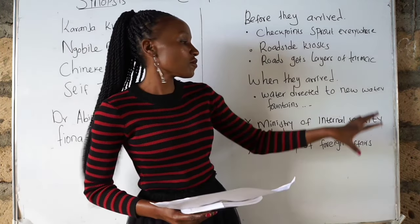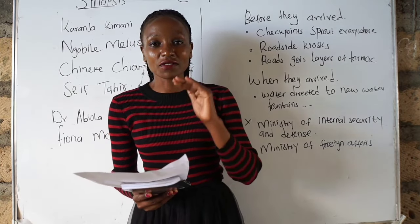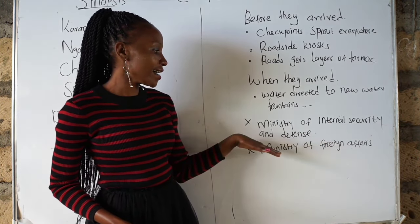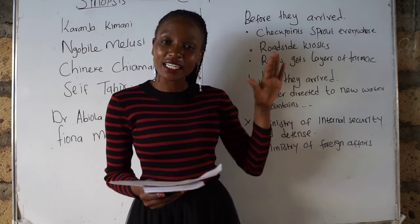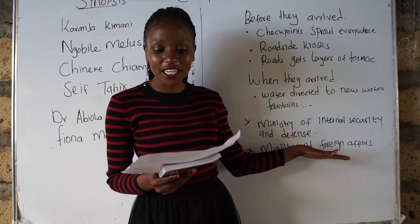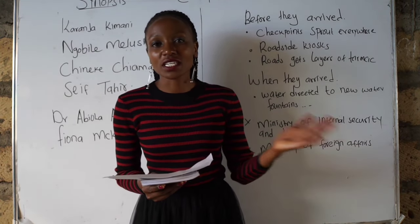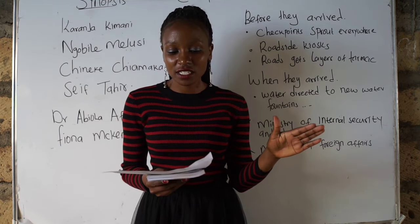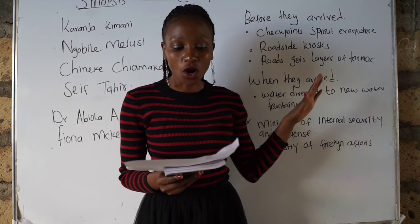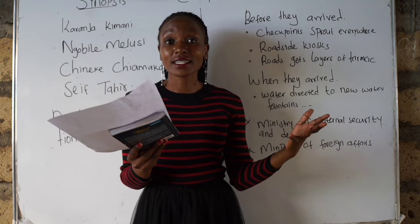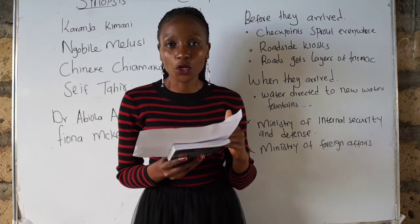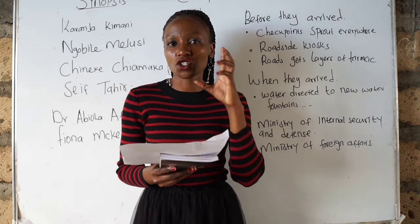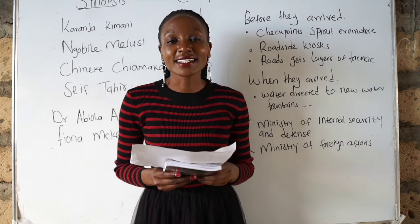Maximum security was ensured for the foreign heads of state. Two bodies were responsible: the Ministry of Defense and the Ministry of Internal Security. The Ministry of Foreign Affairs was also involved, ensuring the safety of visitors. They had two functions: how to seat the heads of state, and how to accommodate them all at the Pinnacle Hotel. After a long debate, it was concluded they would follow alphabetical order to seat and accommodate the presidents.